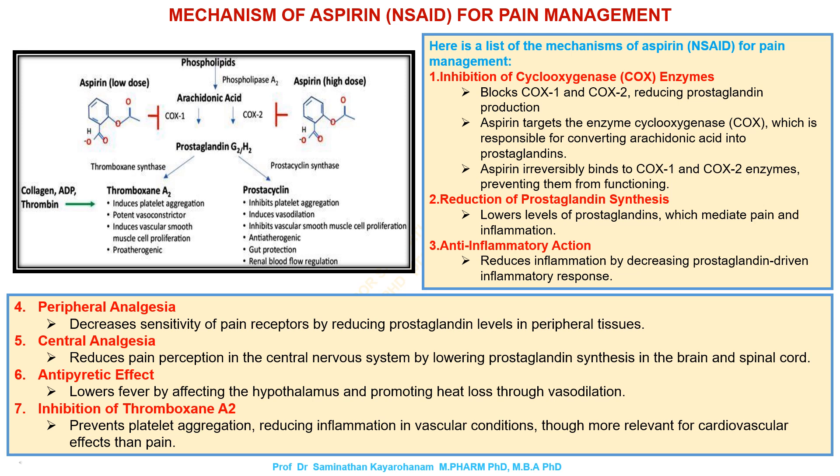1. Inhibition of cyclooxygenase (COX) enzymes blocks COX-1 and COX-2, reducing prostaglandin production. Aspirin targets the enzyme cyclooxygenase (COX), which is responsible for converting arachidonic acid into prostaglandins. Aspirin irreversibly binds to COX-1 and COX-2 enzymes, preventing them from functioning.